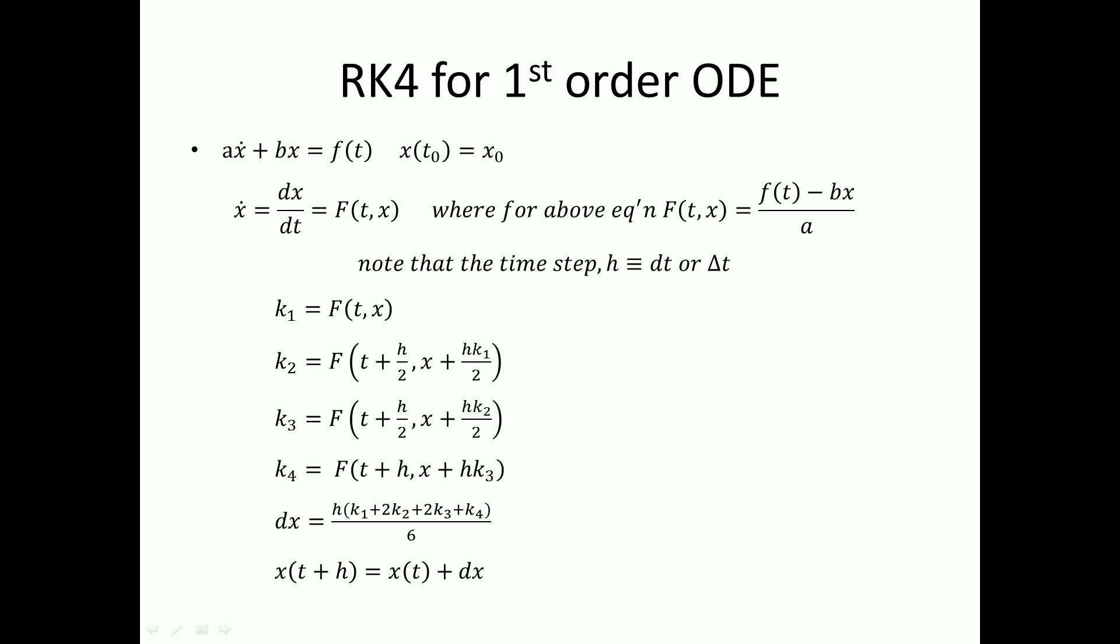Now, let's take a look at how you would use Runge-Kutta to solve some arbitrary differential equation. Here we have ax dot plus bx equals f of t. This is just a simple function to be used as an example. First thing you need to do is isolate the x dot term and turn it into a function of time and position. As you can see here, in our case, the slope is equal to f of t minus bx over a.